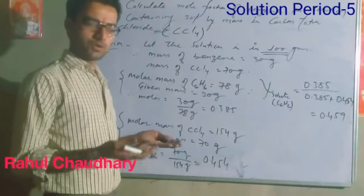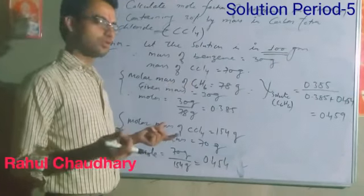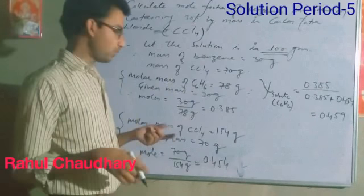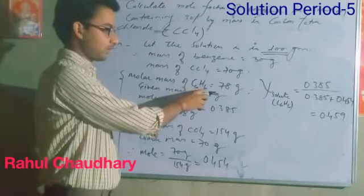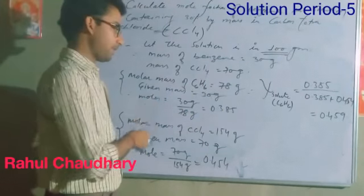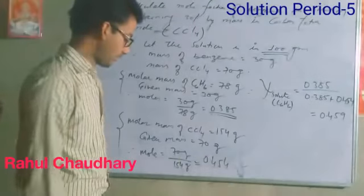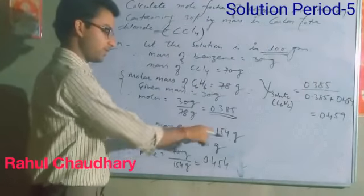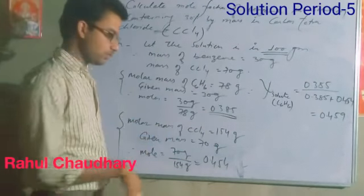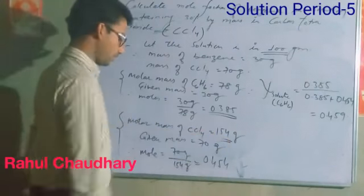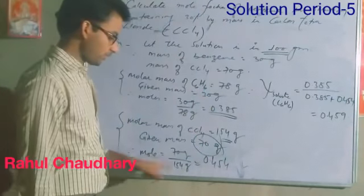We know that mole fraction of solute equals moles of solute divided by total moles of solution. First, find molar mass of benzene C6H6: carbon is 12, so 6 carbons give 72; hydrogen is 1, so 6 hydrogens give 6; molar mass of benzene is 78 g/mol. Moles of benzene equals 30 divided by 78, which is 0.385 mol. For solvent CCl4: molar mass is carbon 12 plus 4 chlorines at 35.5 each, giving 12 plus 142 equals 154 g/mol. Moles of CCl4 equals 70 divided by 154, which is approximately 0.454 mol.